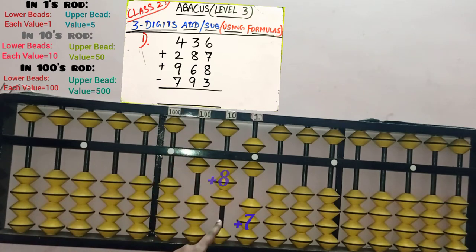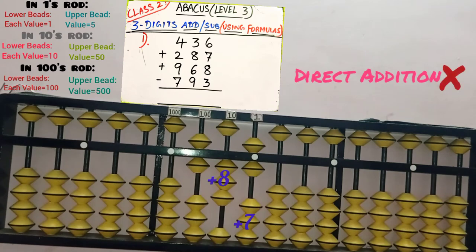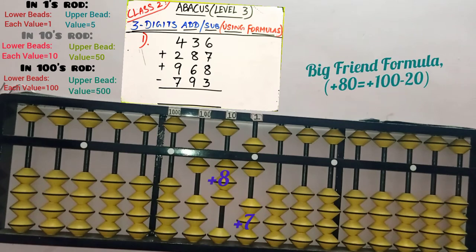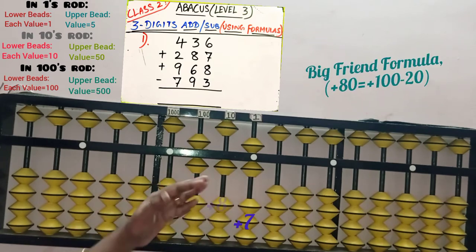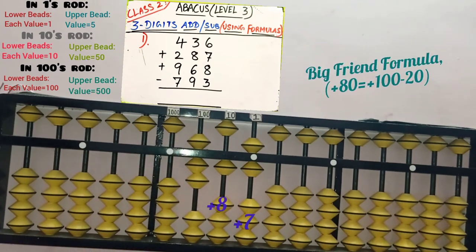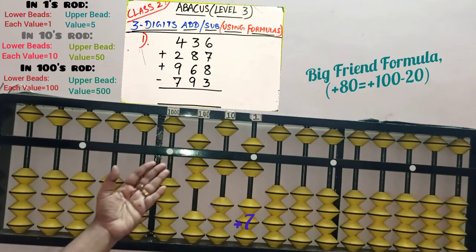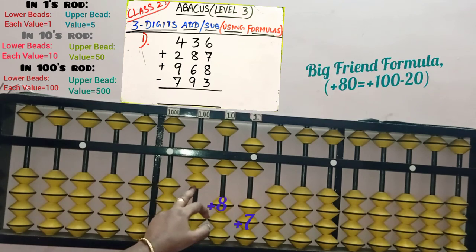Next, add 8 bits in the 10s slot. Only 6 bits are available, so direct addition is not possible. To add numbers from 6 to 9, when we don't have enough bits, first check the big friend — 8's big friend is 2 since 8 plus 2 equals 10. Remove 2 bits in the 10s slot, then add the boss in the next slot: plus 100. So 8 is added in the 10s slot with big friend — plus 100 minus 20 equals 80 added.